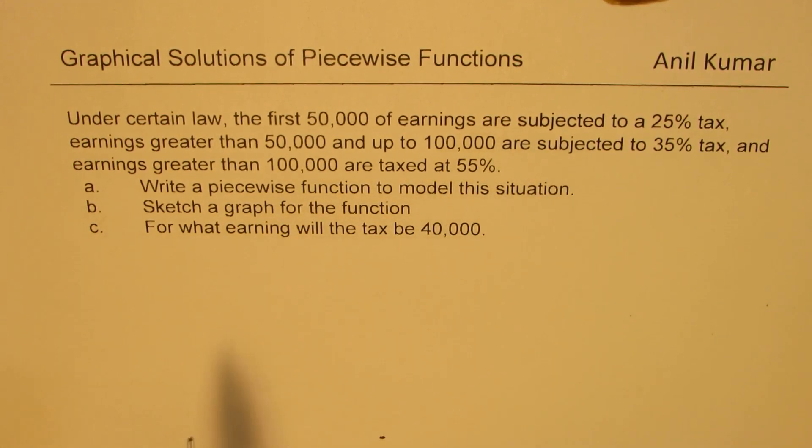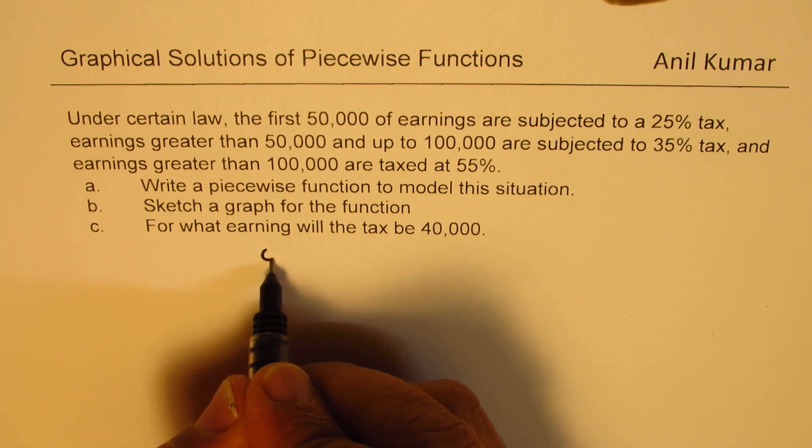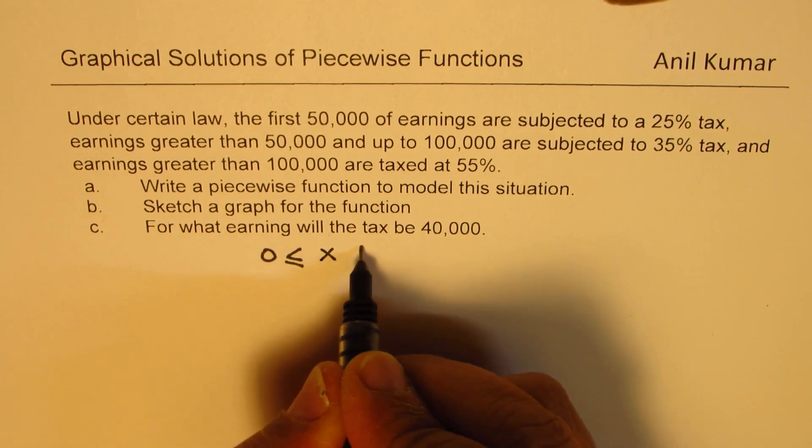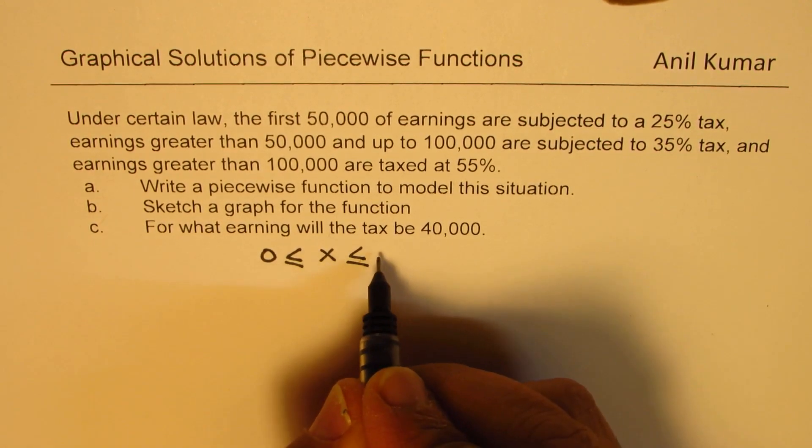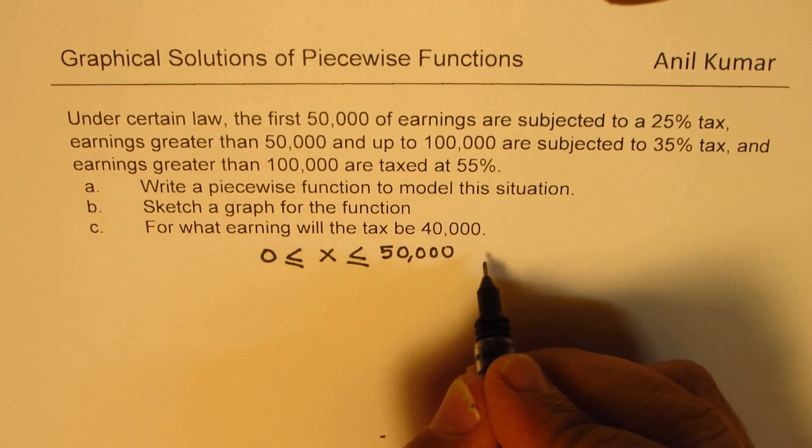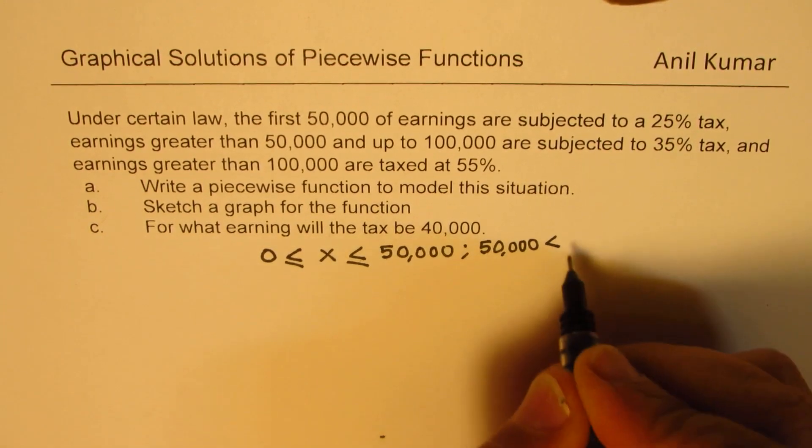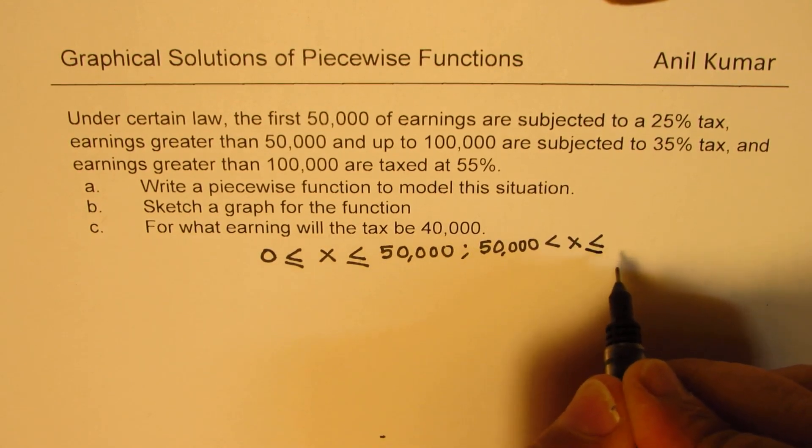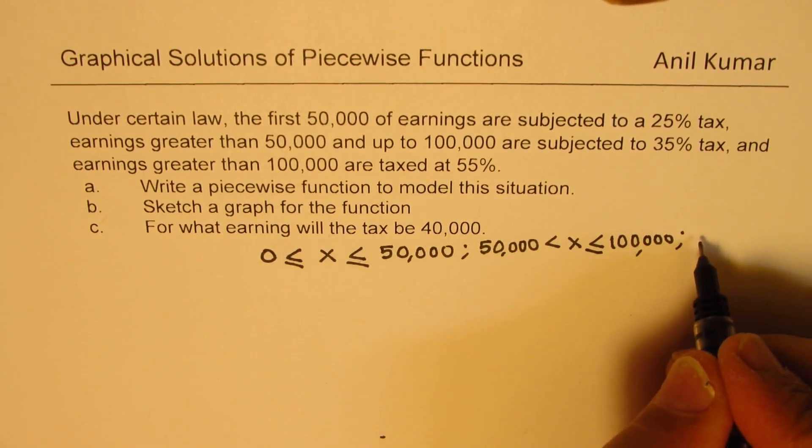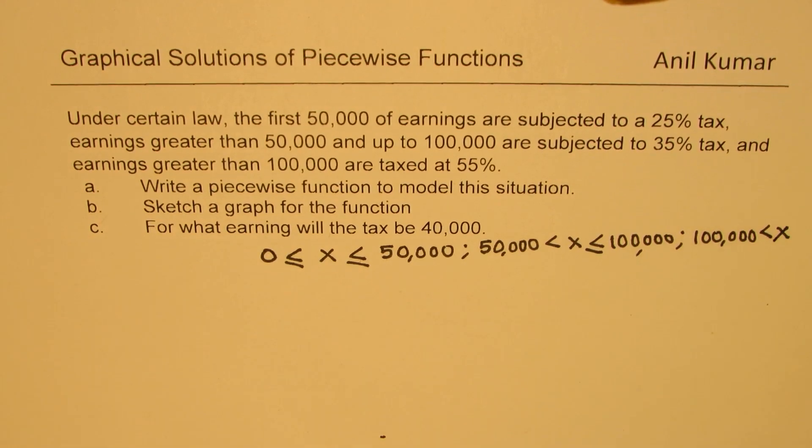We are given three different tax rates for three different brackets. First 50,000 really means it is a bracket where the earnings are greater than or equal to 0. Let's say earnings is X. And they are less than or equal to 50,000. The next bracket is from 50,000 to 100,000. So 50,000 is not included in this bracket, but 100,000 is included. And the last bracket is above 100,000.